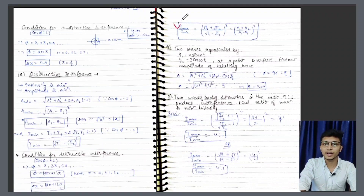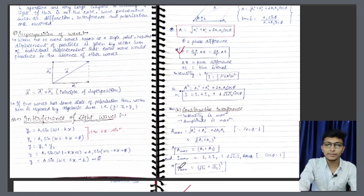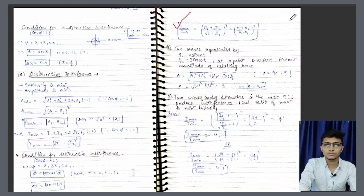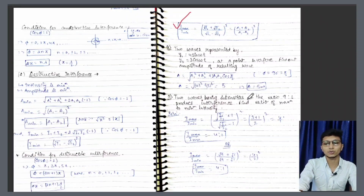Ab ek aata hai I max by I minimum — yani ki maximum intensity by minimum intensity ka ratio — bahut baar yeh poocha ja chuka hai. Aur isko hum aise likh sakte hain. I max = (under root I1 plus under root I2) whole square, I minimum = (under root I1 minus under root I2) whole square. Isi ko hum log aise karke bitha kar dekh sakte hain. Aur yahi cheez ko jab hum log amplitude ke form mein likhte hain, to isko hum aise likh sakte hain.